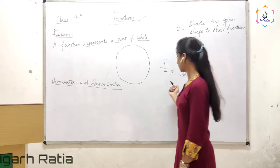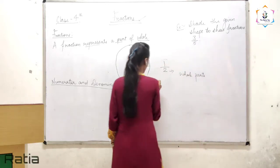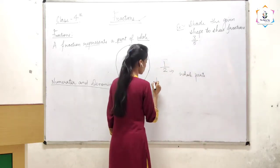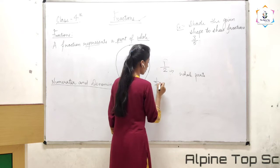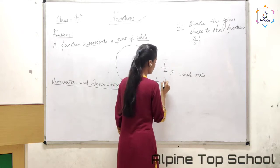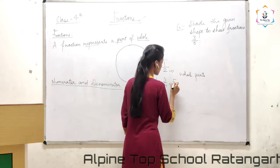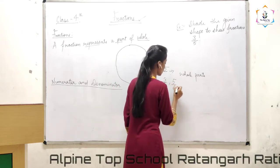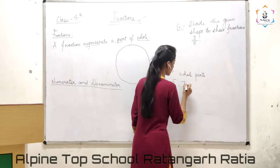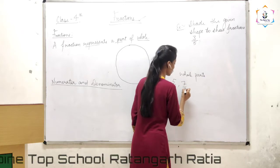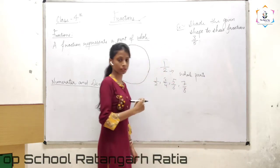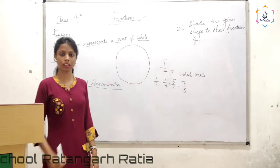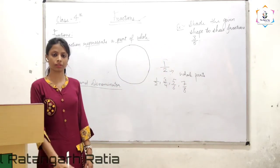Fractions can be 1 by 2, 3 by 4, 5 by 6, 7 by 8. Like these numbers we say a fraction.